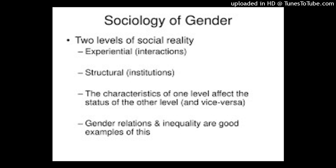Sex refers to the biological and psychological differences between men and women. Gender refers to the social and cultural differences between men and women. Sex is based on biological differences — it is nature. Gender is based on social and cultural differences. Sex has two main categories: male and female. Gender has two main categories: masculine and feminine. Sex remains the same regardless of time and culture. Gender roles and expectations may differ across time and culture. Sex is created by reproductive needs, for example biological features. Social norms create gender distinctions.